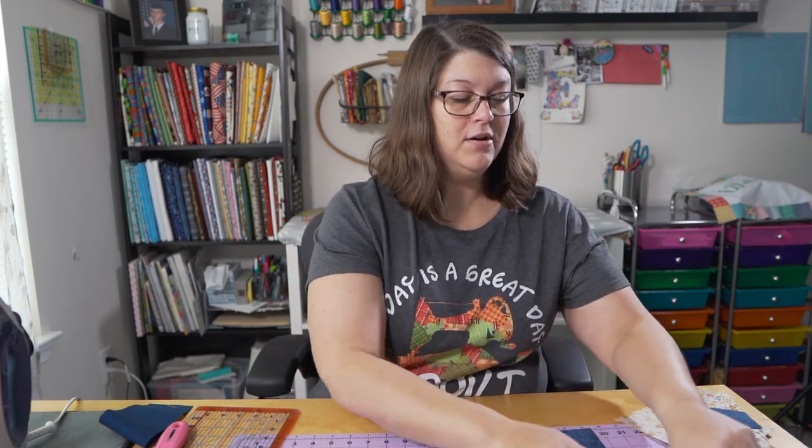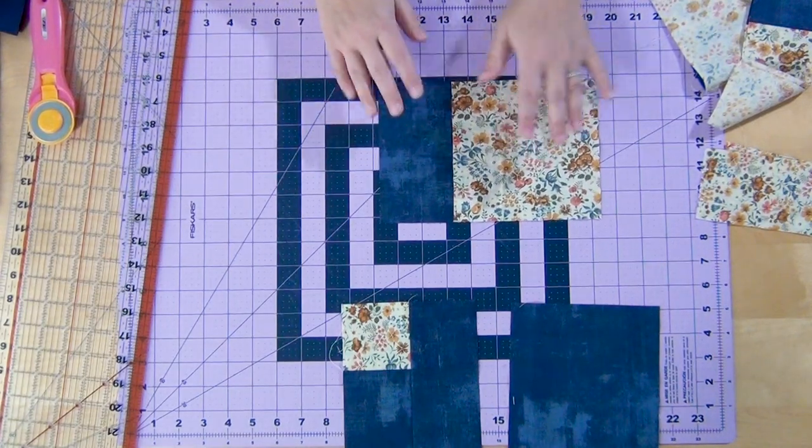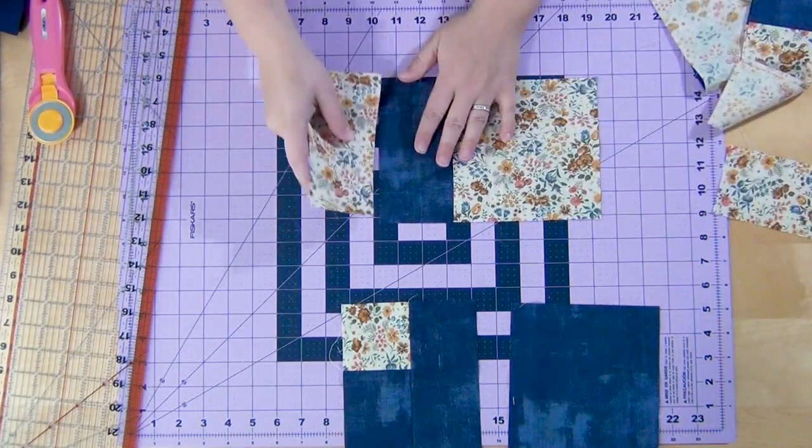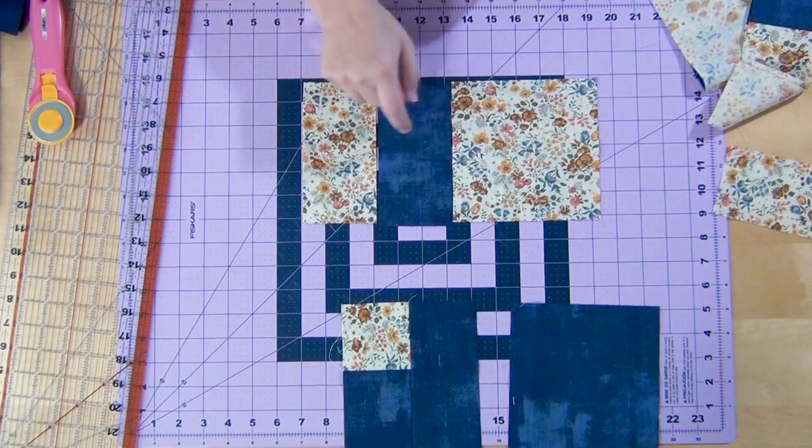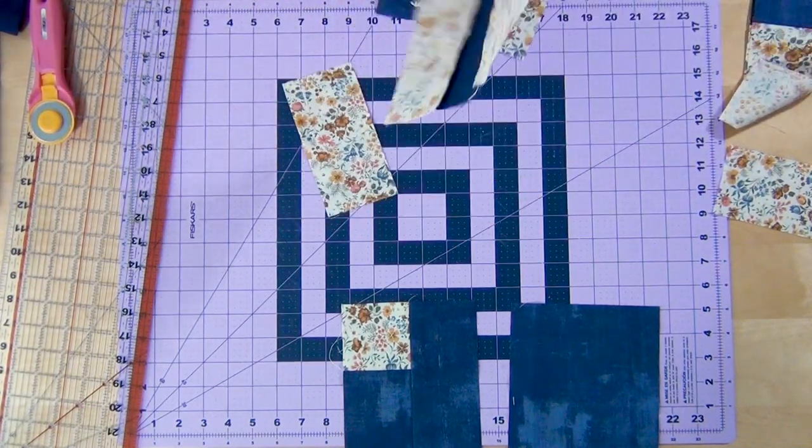And then you're going to take your 6 inch block from your light piece, your 3 inch block from your dark and your 3 inch block from your light. And you're going to sew these three together. And you'll get a block that looks like this.